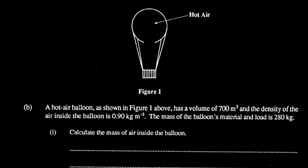The next question tells us that a hot air balloon has a volume of 700 cubic meters and the density of the air inside the balloon is 0.9 kilogram per cubic meter. The mass of the balloon's material and load is 280 kilograms, and we're asked to calculate the mass of the air inside the balloon.